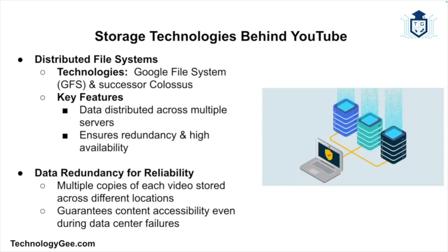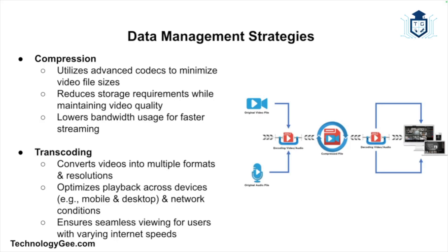Distributed file systems such as the Google File System and its successor, Colossus, are used to store and manage video data. These systems distribute data across multiple servers, ensuring redundancy and high availability. To prevent data loss, YouTube stores multiple copies of each video across different locations. This redundancy ensures that even if one data center experiences an issue, the video content will remain accessible.